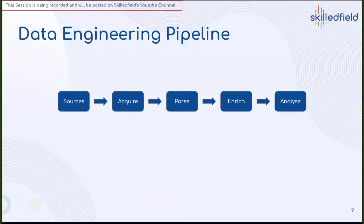This is the standard data engineering pipeline. To recap: there's a data source, you acquire the data, then you massage and process the data — this is what we call parsing, the data engineering part. Then you enrich the data by adding contextual information. Then you analyze the data to provide insights or answer questions.